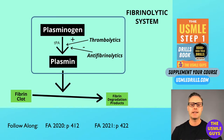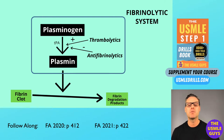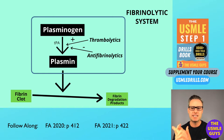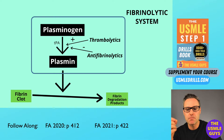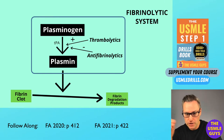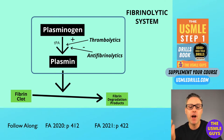Thrombolytics work to dissolve clots by activating plasminogen. That forms a cleave product called plasmin, which is a proteolytic enzyme that has the ability to break the fibrin crosslinks that give a clot its structural integrity. There are three major classes of fibrinolytic medications: tissue plasminogen activators (TPAs), streptokinase, and urokinase. For TPA: it binds to fibrin on the surface of the clot, activates fibrin-bound plasminogen, plasmin is cleaved from plasminogen associated with fibrin, and fibrin molecules are broken apart, leading to dissolving of the clot.